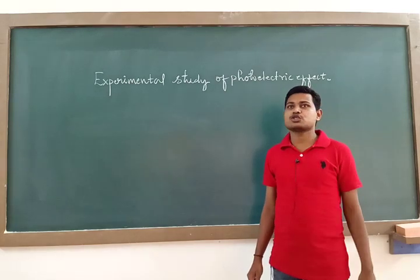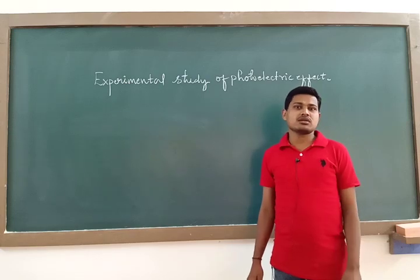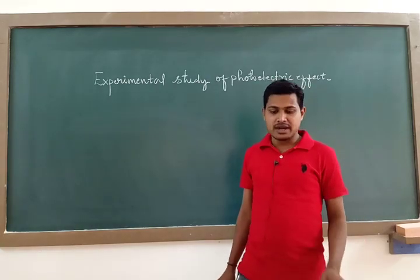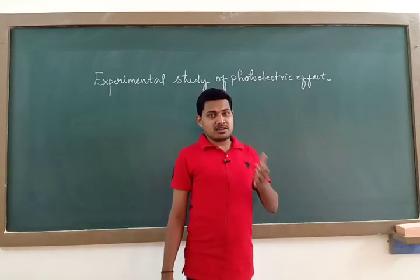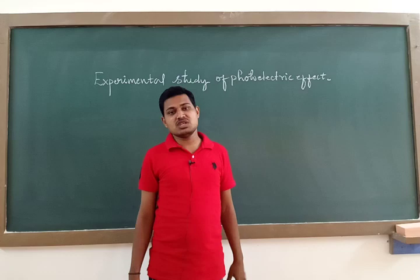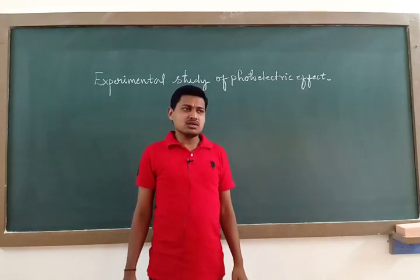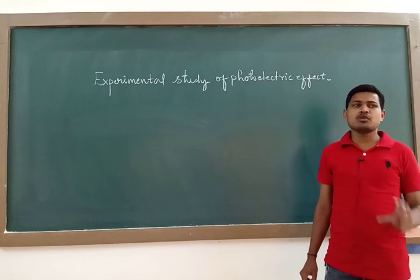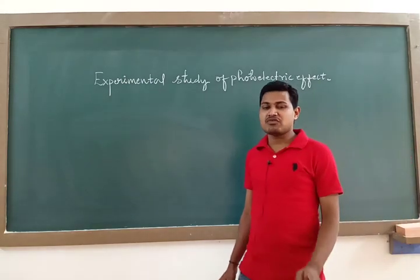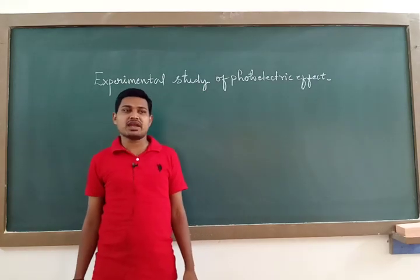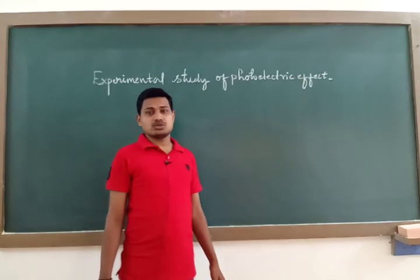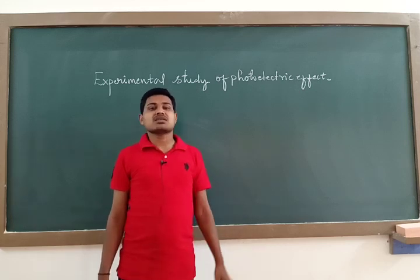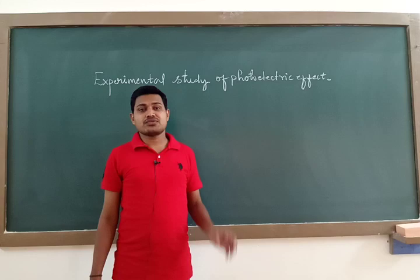Dual nature of matter and radiation means these two different things — matter and radiation — each has two natures: one is particle nature and another is wave nature. As per the PU syllabus for physics, this chapter is concerned with particle nature. So we are going to study the particle nature of light, and to confirm it, we have a phenomenon known as the photoelectric effect. This phenomenon concludes the particle nature of light.